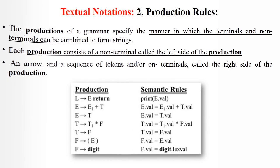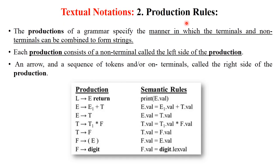The next textual notation is production rules. The production of a grammar specifies the manner in which terminals and non-terminals can be combined to form a string. Each production consists of a non-terminal on the left side, an arrow, and a sequence of tokens on the right side. Detailed explanations of production rules and semantic rules are available in the system programming playlist linked in the description box.